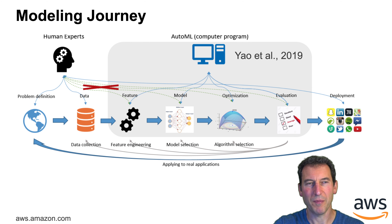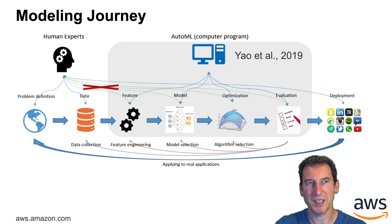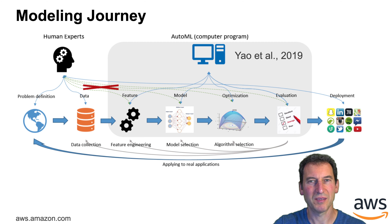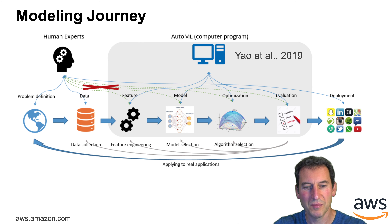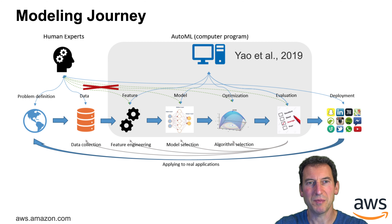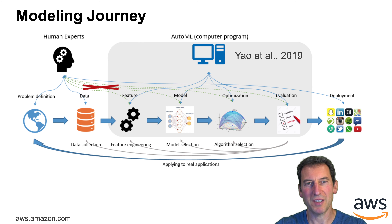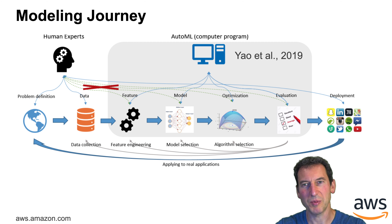Let's look at the modeling journey, from a review paper by Yao et al. The human expert defines the problem and does something to generate the data. The authors quite reasonably argue that AutoML should take care of everything from feature generation and engineering, to model selection, to optimization, to evaluation, iterating suitably until you have something good, and then you deploy.